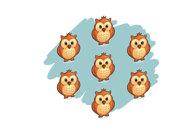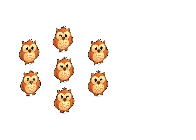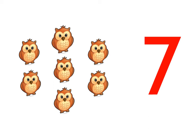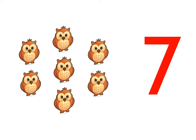How many owls can you see? Let's count the number of owls. There are seven owls. One, two, three, four, five, six, seven.